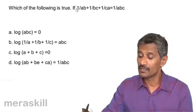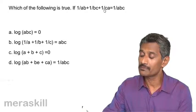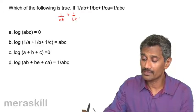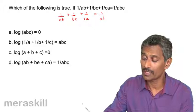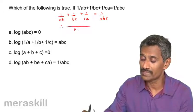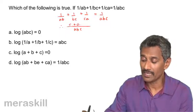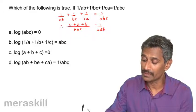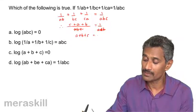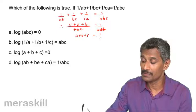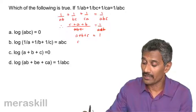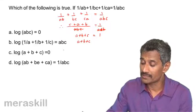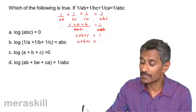The next problem asks: which of the following is true if 1/(AB) + 1/(BC) + 1/(CA) = 1/(ABC)? Taking LCM as ABC: C/ABC + A/ABC + B/ABC = 1/ABC. Since ABC cancels, we get C + A + B = 1, that is A + B + C = 1.